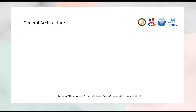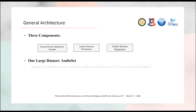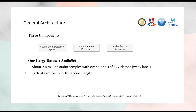Here we introduce the architecture of our model. It contains three components: the sound event detection system, a latent source processor, and an audio source separator. We use only one dataset — AudioSet — which has 2.4 million audio samples with event labels of 527 classes. This is the wiki label because it does not provide exact start and end times or boundaries of events in the audio sample. Each sample is 10 seconds.